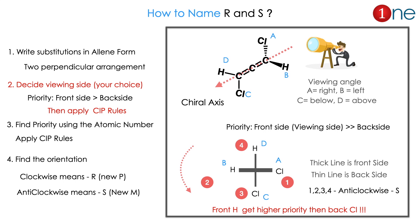Now let us see how we can find R and S. First draw the allene atom and find the viewing angle. Then decide the viewing side. The front side gets higher priority than the back side — then apply the CIP rule. Here A and B are the front side; C and D are the back side. Front side is A and B, which is chlorine and hydrogen — chlorine gets first priority, then hydrogen. Back side is hydrogen and chlorine — chlorine gets higher priority then hydrogen. The important thing: front hydrogen gets higher priority even than the back side's chlorine. So priority position matters, not just atomic number. If the direction is anti-clockwise, it is S (new name M); clockwise is R (new name P).